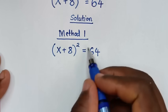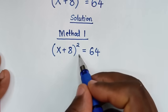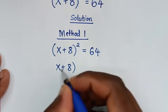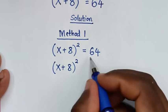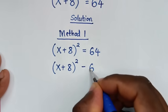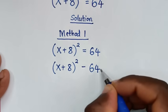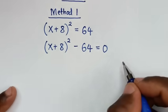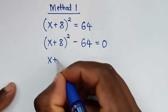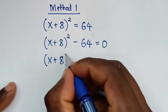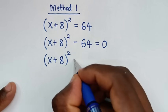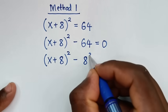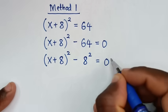In the first step we'll take 64 to the left side. So it will be (x + 8)² minus 64 = 0. Then it will be (x + 8)² minus 64, and 64 is the same as 8², so (x + 8)² minus 8² = 0.